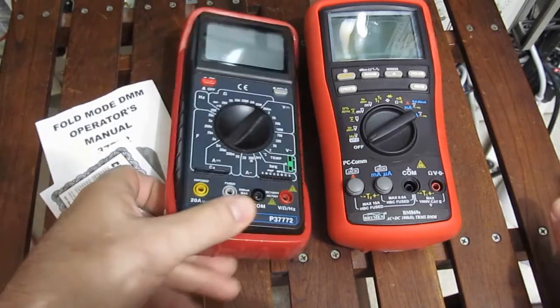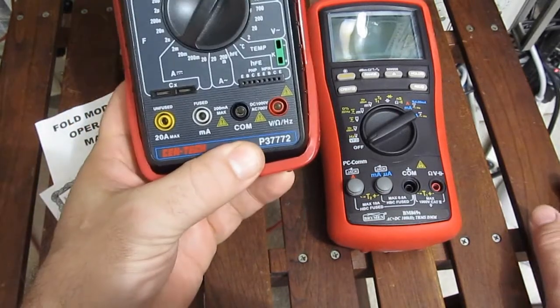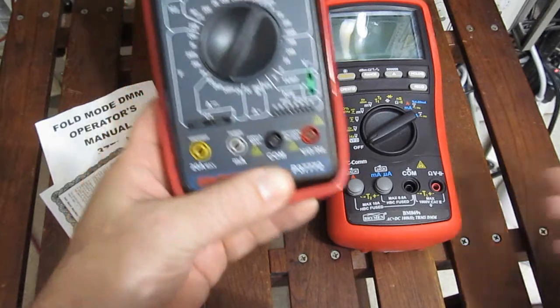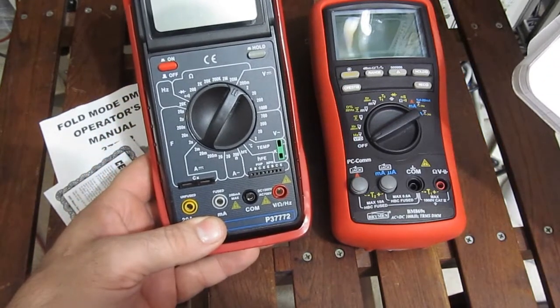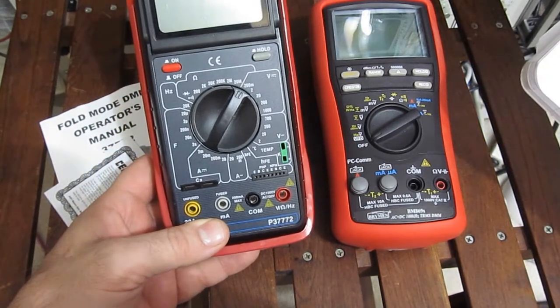Some time ago I made a video on this Harbor Freight meter. This is a P3777-2. This is also a rebranded Maztec, model MS9508.